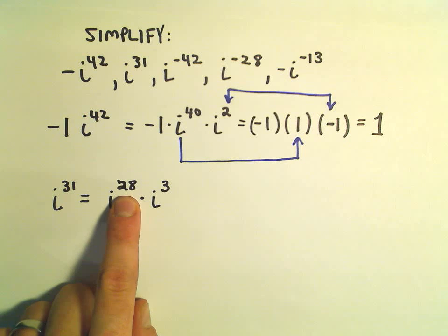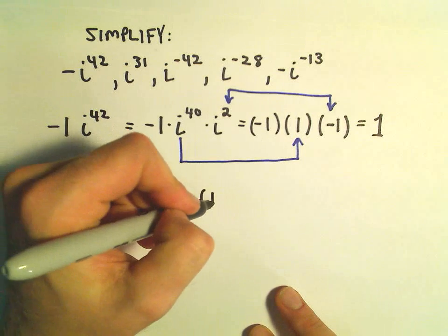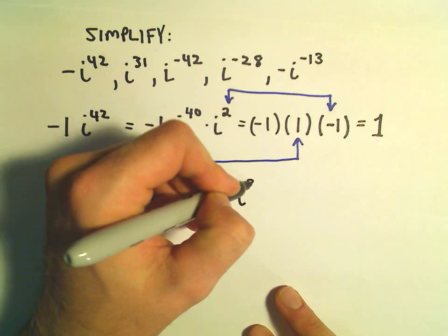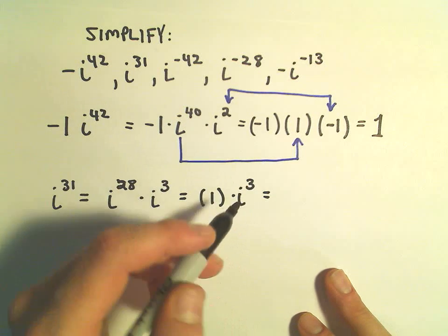And then if we write that as i to the third. So again, 28 is a multiple of 4, that's 7 times 4, so that's just going to give us 1 times i to the third.